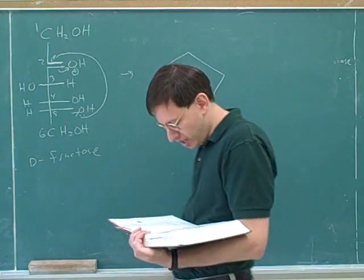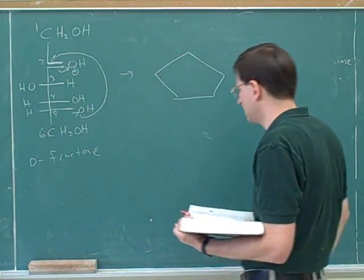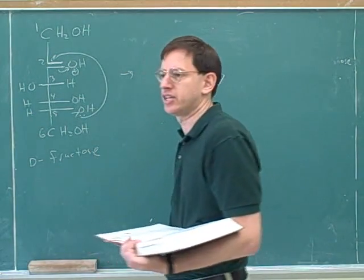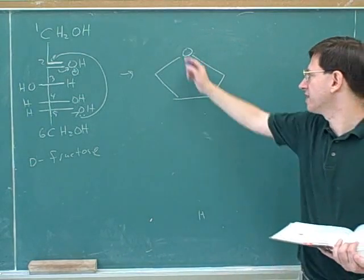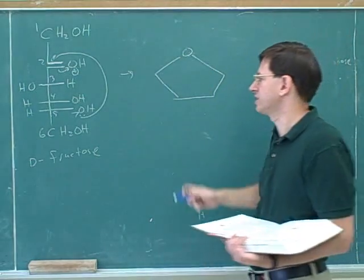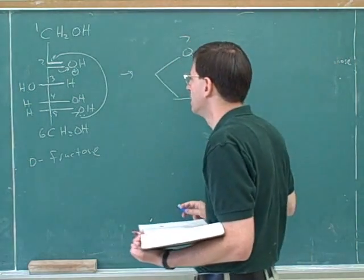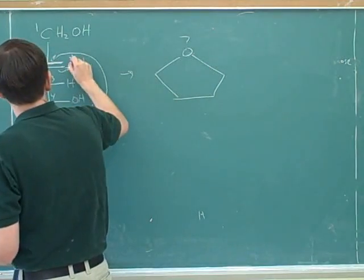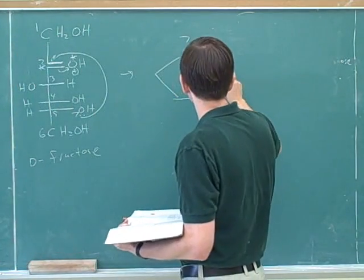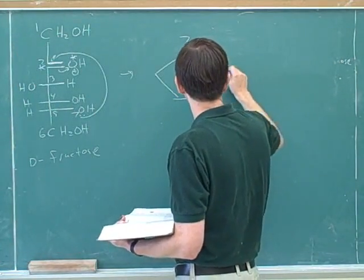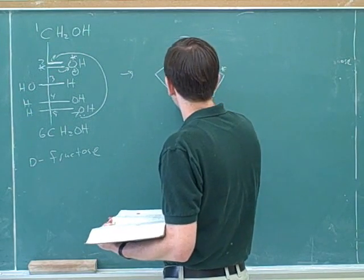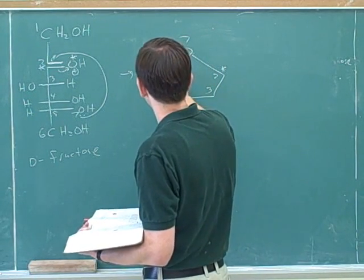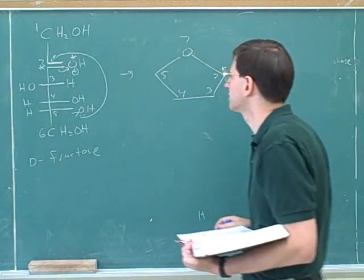We know that one of the atoms will be oxygen, and it's conventional for a five-membered ring to put the oxygen at the top. This would be the number seven oxygen. Then we know I'm going to put in stars here too — this is the carbonyl. So then we have number two, which is the carbonyl, three, four, and five.